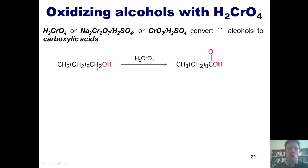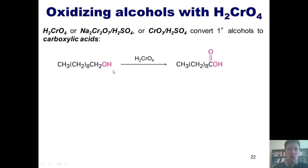Because I have two total bonds to hydrogen on this carbon, I end up with two new bonds to oxygen. Thus, you can see that my total number of bonds that this carbon has to oxygen goes from being one in the starting material to being three total carbon-oxygen bonds in the product.